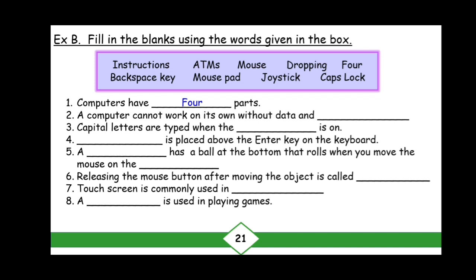Number two: A computer cannot work on its own without data and instructions. Number three: Capital letters are typed when the caps lock is on. Number four: Backspace key is placed above the enter key on the keyboard.